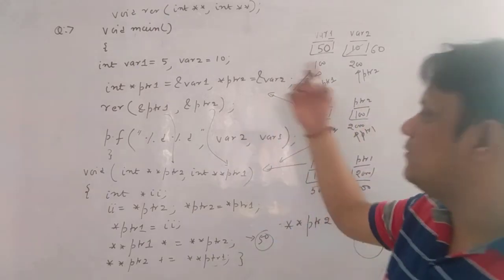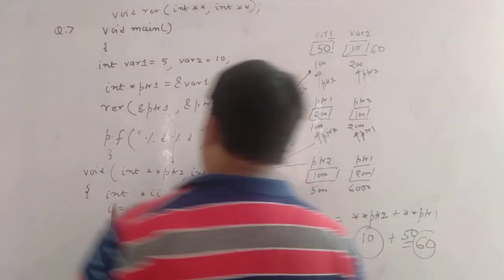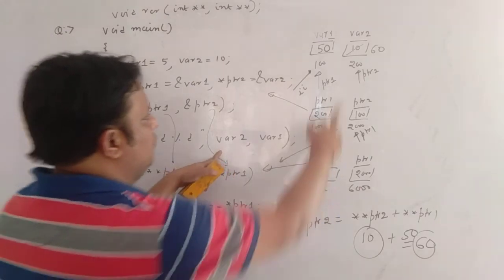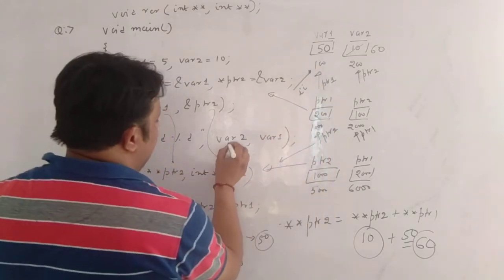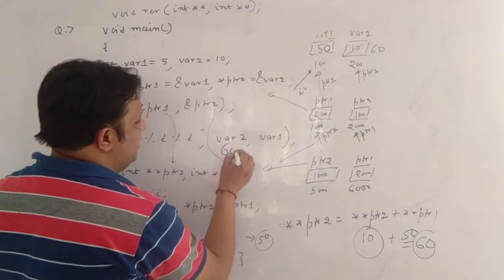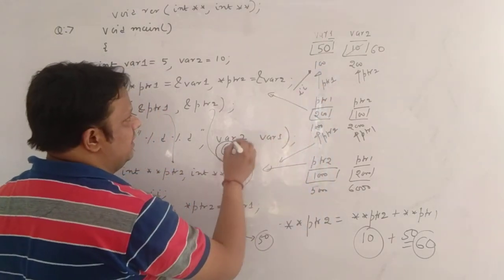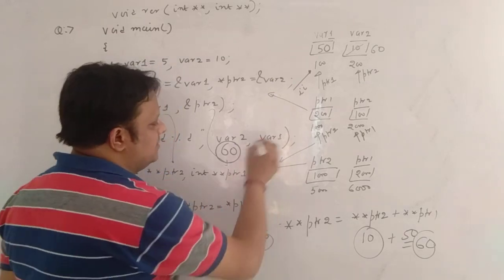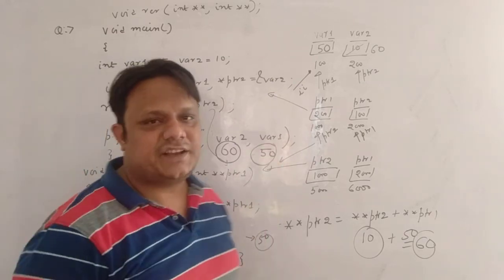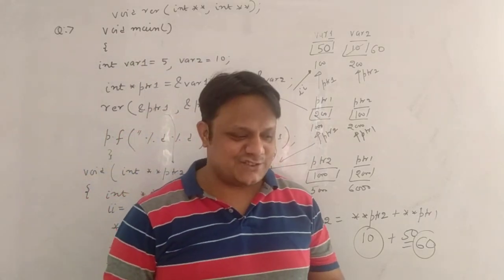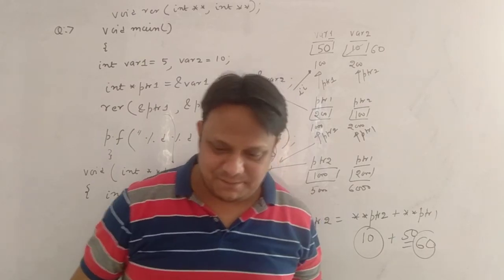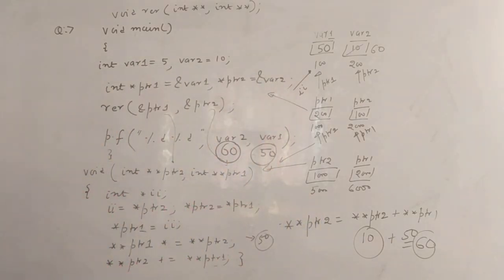So when the control goes back, you are printing variable 2 — the value of variable 2 is 60 — and the value of variable 1 is 50. The answer is 60, 50. Pretty interesting question. Take care, guys. Thank you.